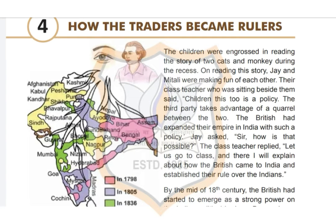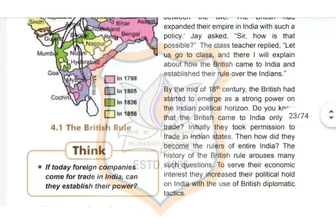Today we will start Chapter 4: How the Traders Became Rulers. In the first chapter on the arrival of Europeans in India, we learned that Europeans came to India for trading purposes. But how did those traders become rulers? By the mid-18th century, the British had started to emerge as a strong power on the Indian political horizon. They initially took permission to trade in Indian states — so how did they become rulers of the entire country? The history of British rule raises many such questions.